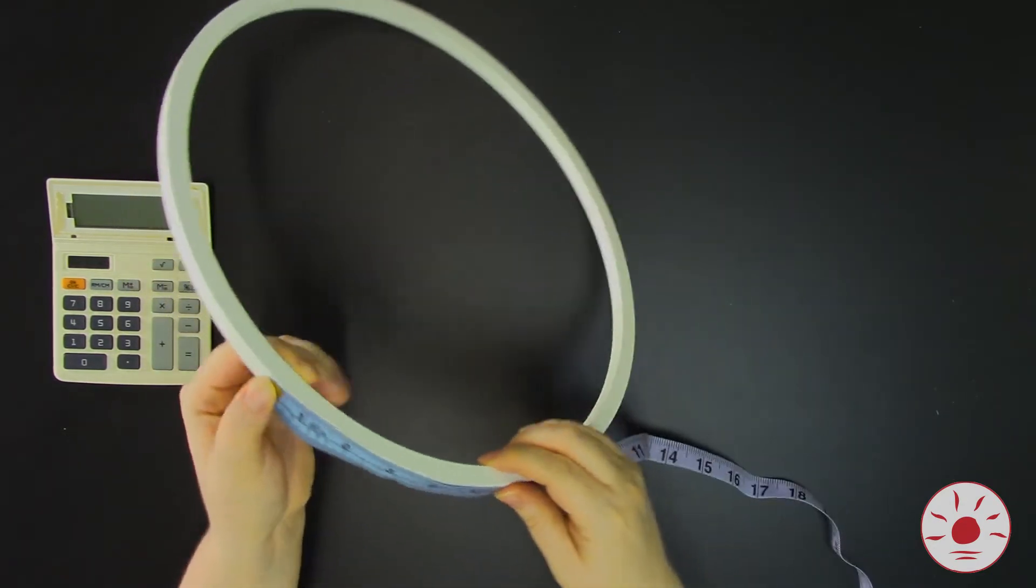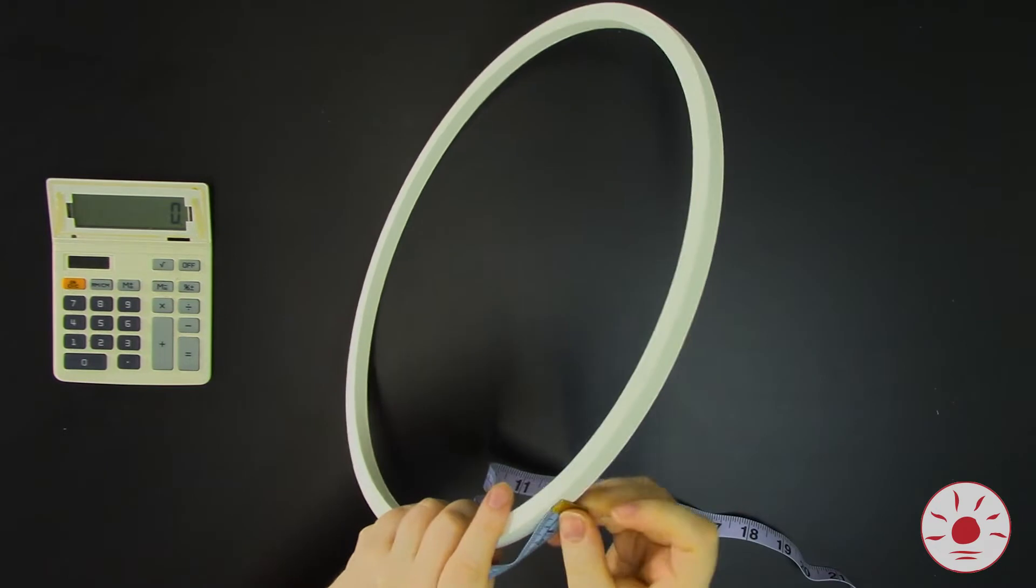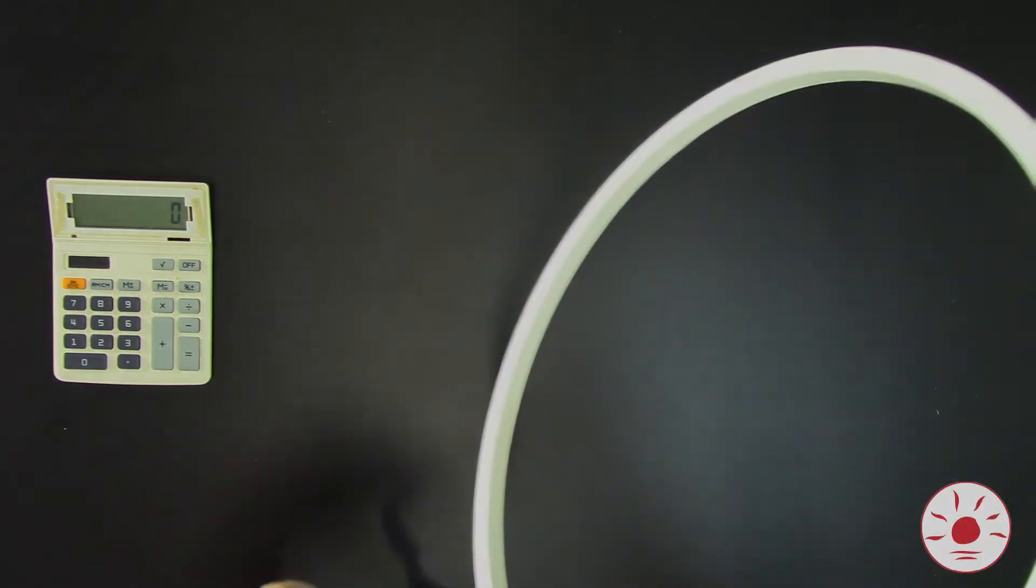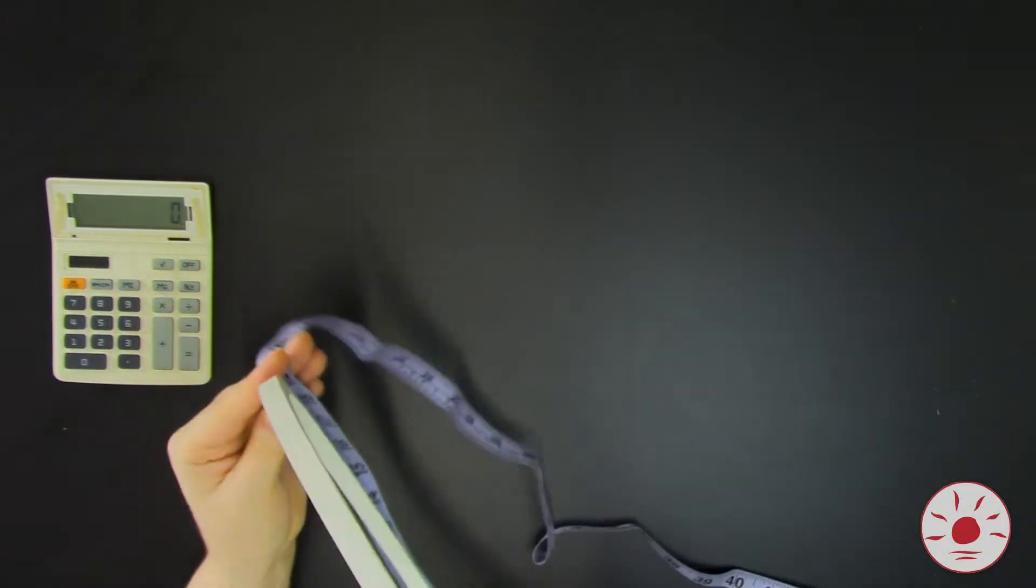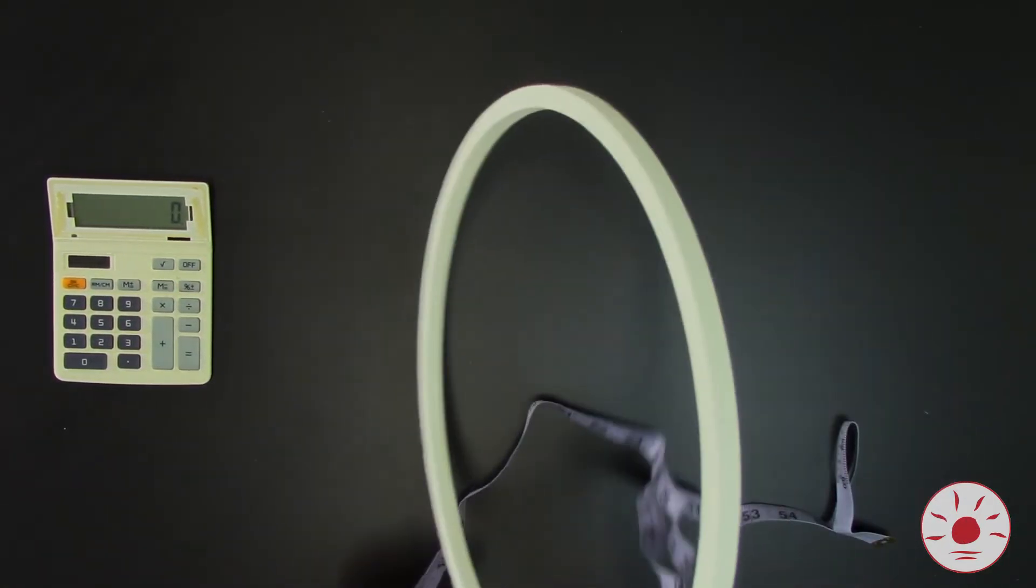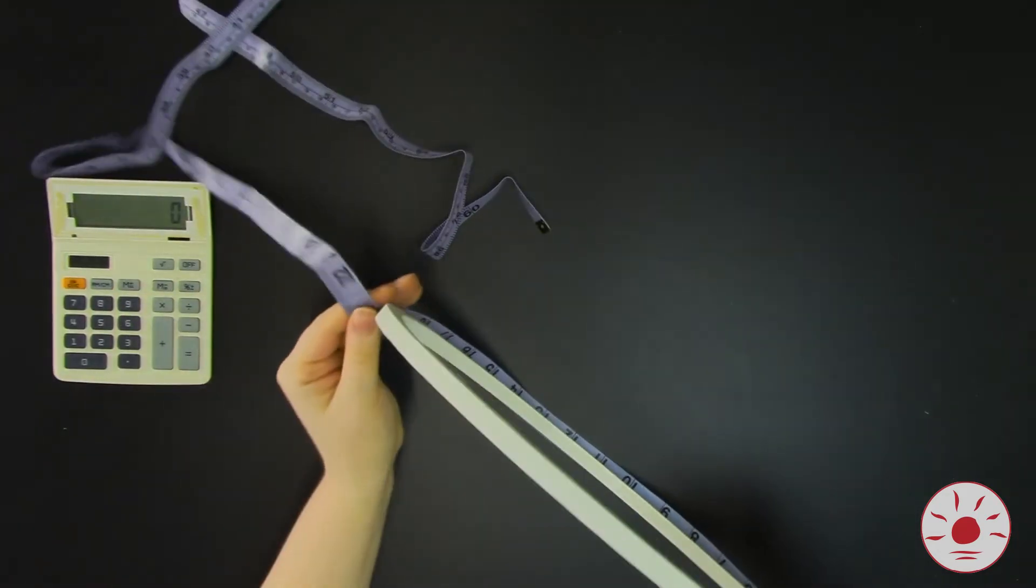First, you're going to use a marker or pencil and a measuring tape or ruler to divide your hoop into 20 equal parts. There's a couple of different ways to go about this. You can use your ruler to divide the hoop in half vertically and then in half horizontally to give you four quarters. From there, you can divide each of those four quarters into five and that will give you 20 segments.